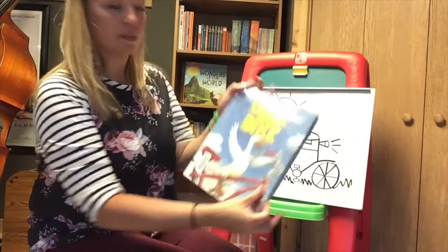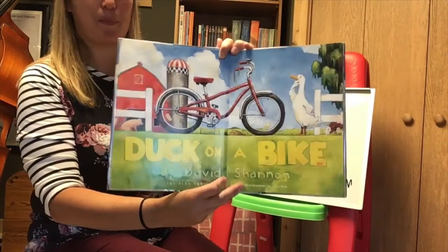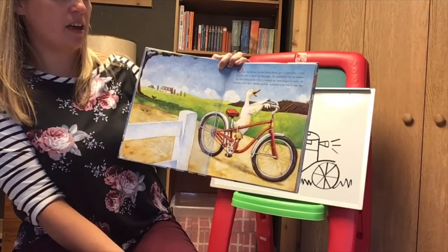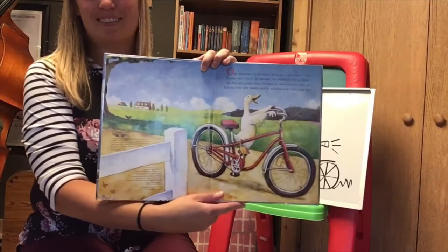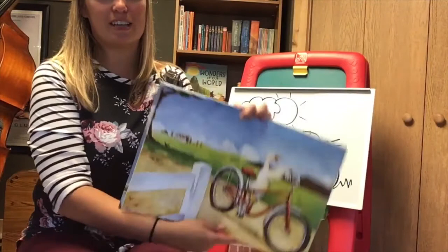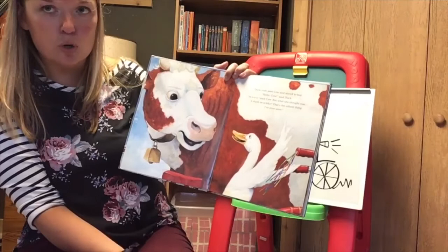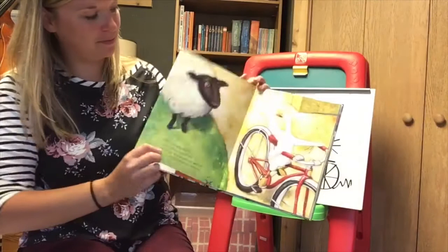Duck on a Bike by David Shannon. Duck on a bike. One day down on the farm duck got a wild idea I bet I could ride a bike he thought he waddled over to where the boy parked his bike climbed on and began to ride at first he rode very slowly and he wobbled a lot but it was fun kind of looks like that bike duck rode past cow and waved to her hello cow duck said moo said cow but what she really thought was a duck on a bike that is the silliest thing I've ever seen